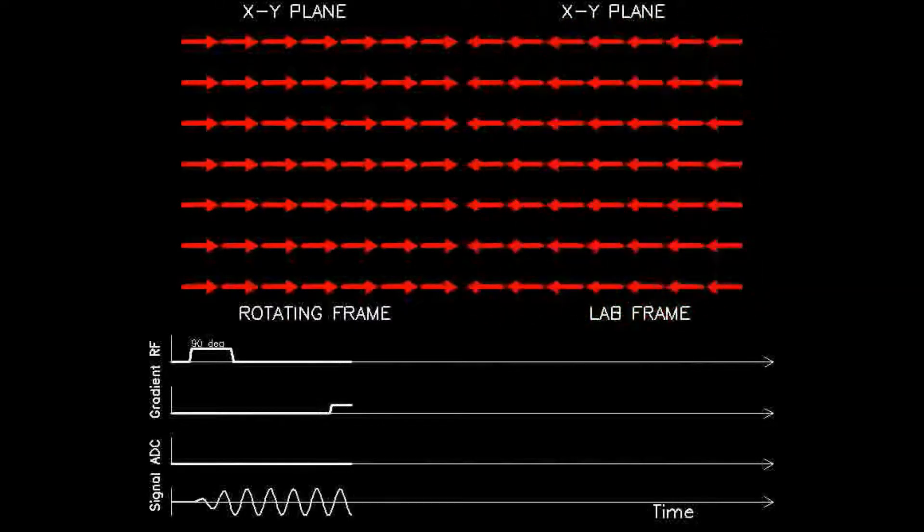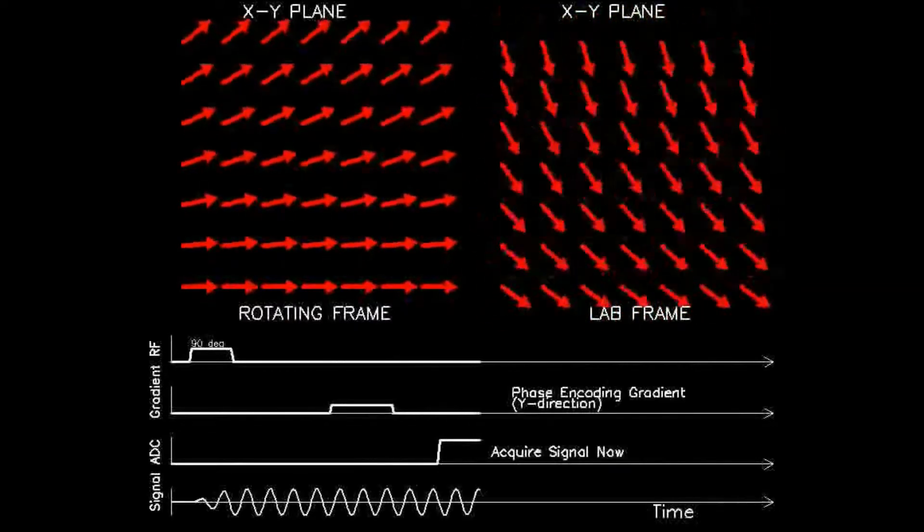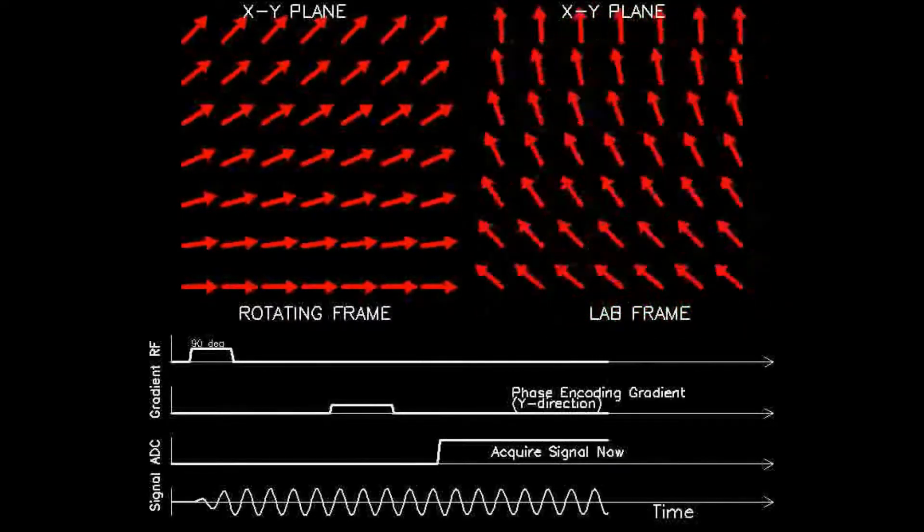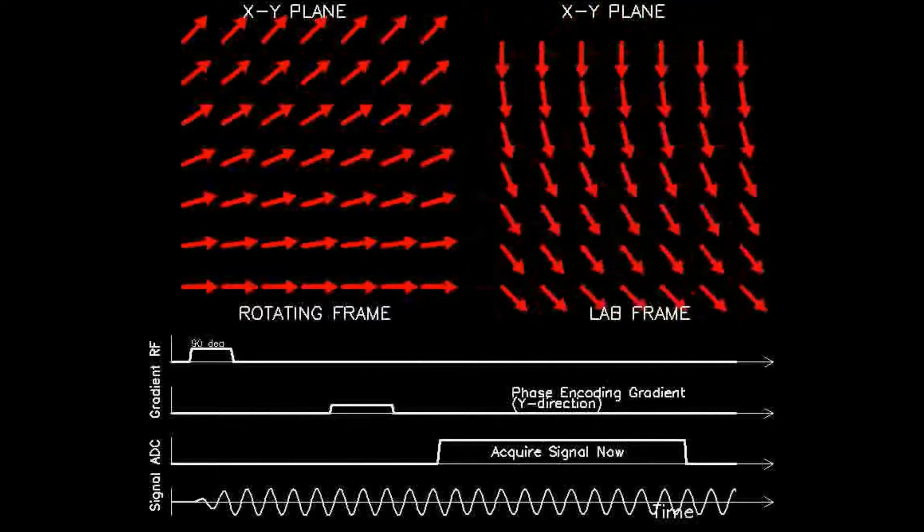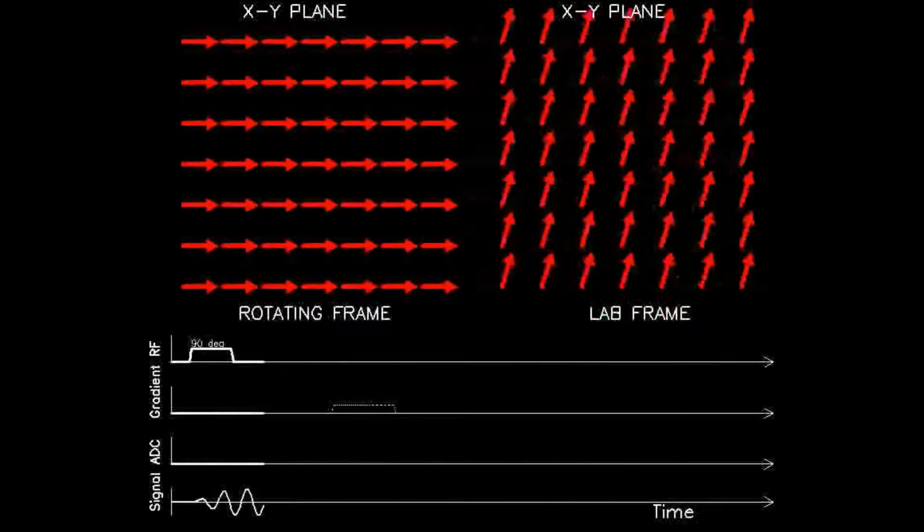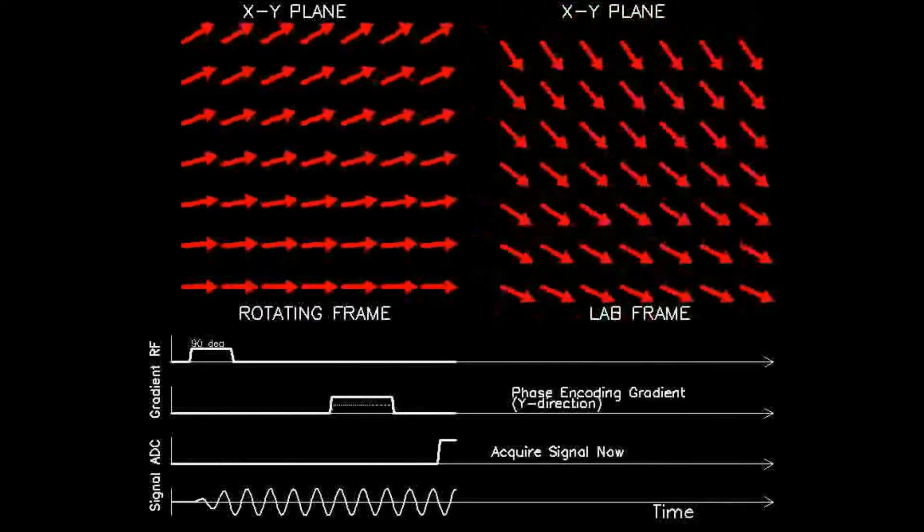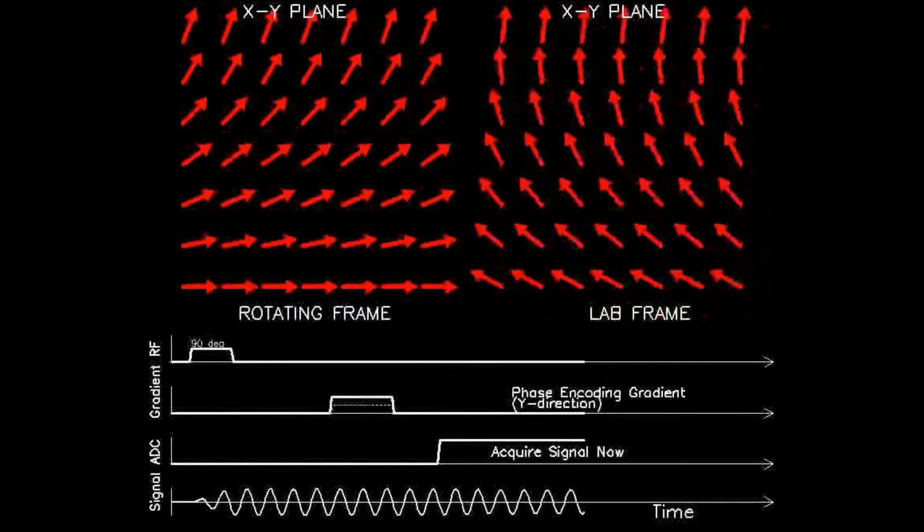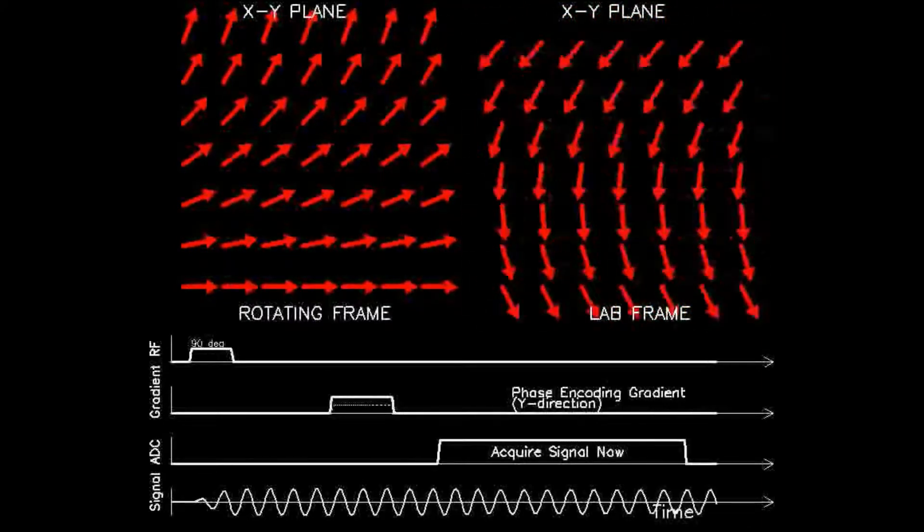This animation illustrates the strategy of phase encoding. The top left and right panels show an array of 7 by 7 voxels in the rotating and laboratory frames, respectively, with each arrow representing the net transverse magnetization vector of all the dipoles within the voxel.